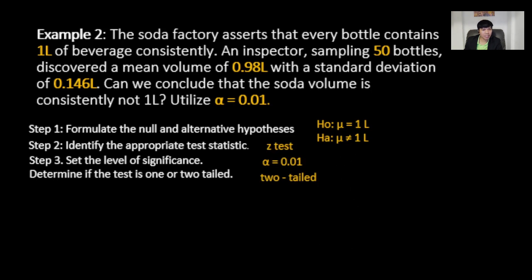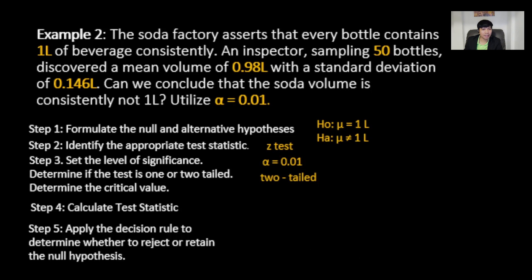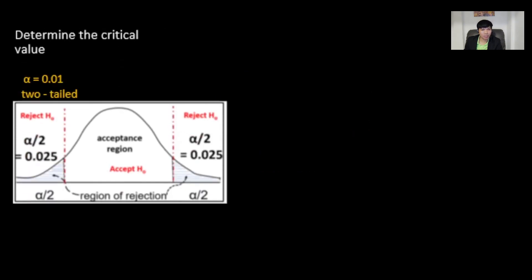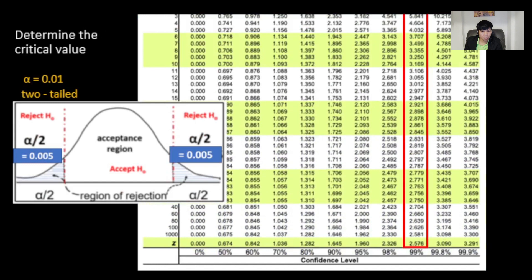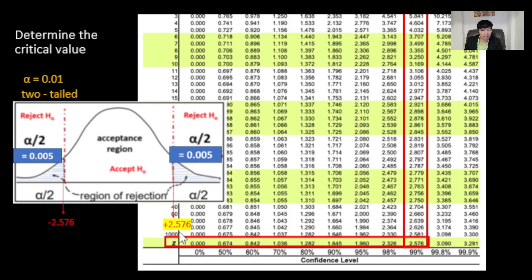To determine the critical value, alpha is 0.01. From the Z-table, scrolling down to Z for a two-tailed test at 0.01, we get 2.576. Since it's a two-tailed test, the rejection region is on both sides: the critical values are negative 2.576 on the left and positive 2.576 on the right.